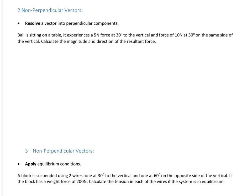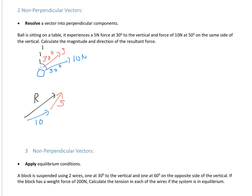We've got a ball sitting on a table. It experiences a 5-newton force at 30 degrees to the vertical and a force of 10 newtons where that angle is 50 degrees. We want to calculate the magnitude and direction of the resultant force. If we try putting them tip to tail, the immediate problem is this is no longer a right-angled triangle, so we can't use Pythagoras' theorem directly.